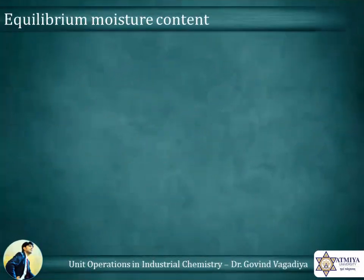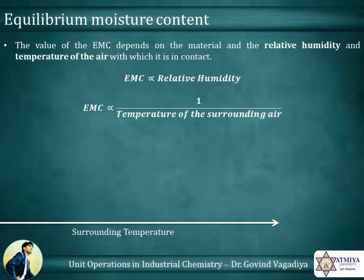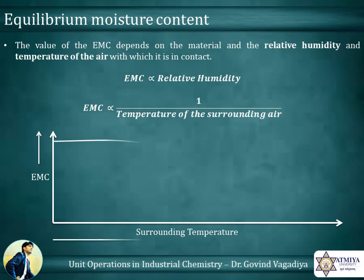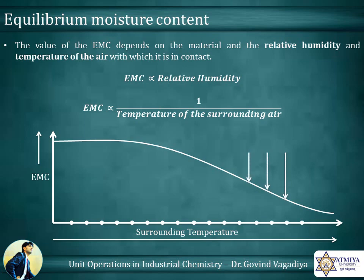The value of the EMC depends on the material, the relative humidity, and the temperature of the air with which it is in contact. As observed in the given graph, whenever the surrounding temperature increases, the equilibrium moisture content decreases.